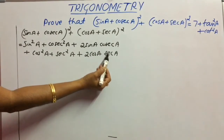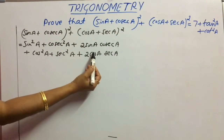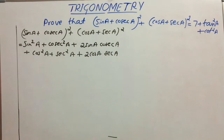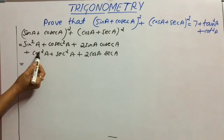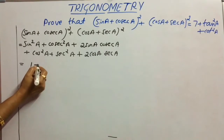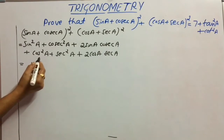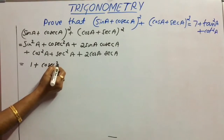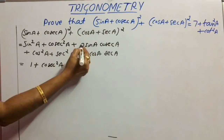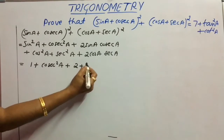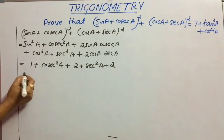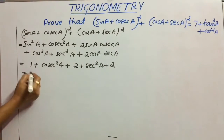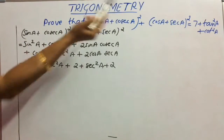Therefore, the remaining values: using the identity sin²A + cos²A = 1, and keeping all other values as they are, we get 1 + cosec²A + 2 + sec²A + 2. So 2 + 2 + 1 gives us 5 plus cosec²A + sec²A.